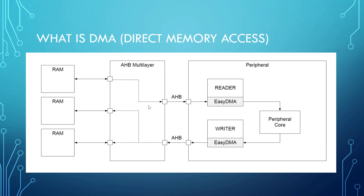DMA is an internal module that works alongside the processor. We can say the DMA is a master as well, because it can initiate transfer procedures and transfer data from RAM to peripherals and from peripherals back to RAM. The main advantage is that the processor is free to perform something else while data is being transmitted. That's enough for the basics — let's see how we can program this.